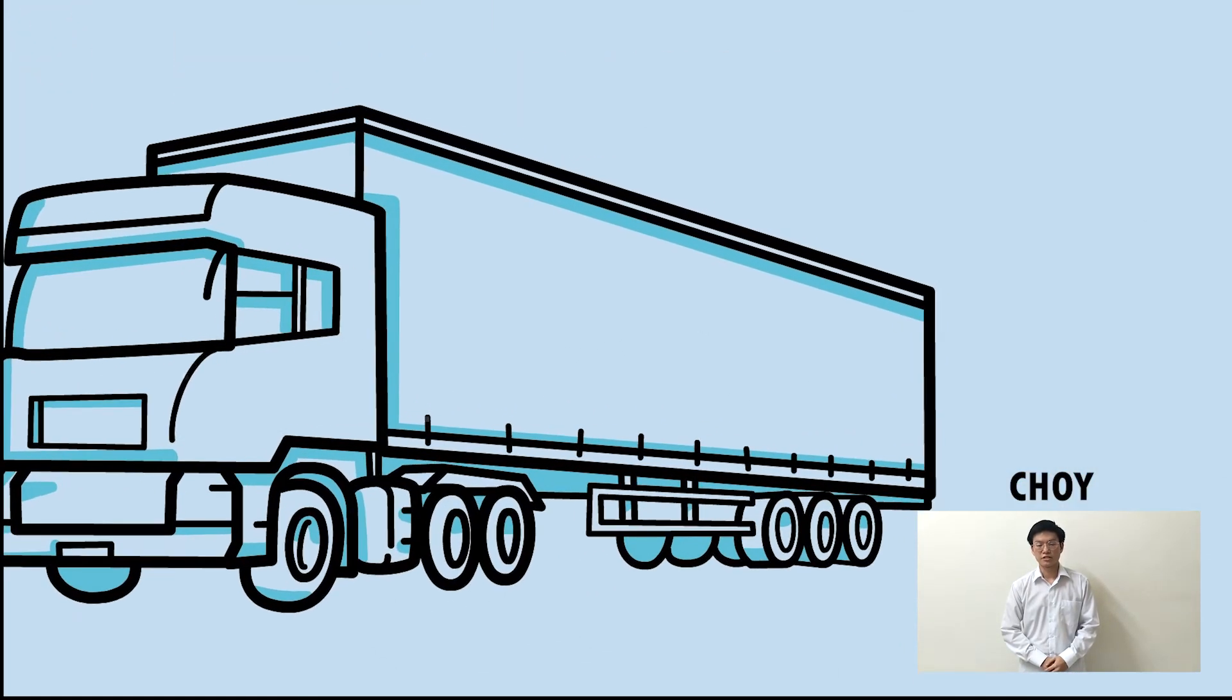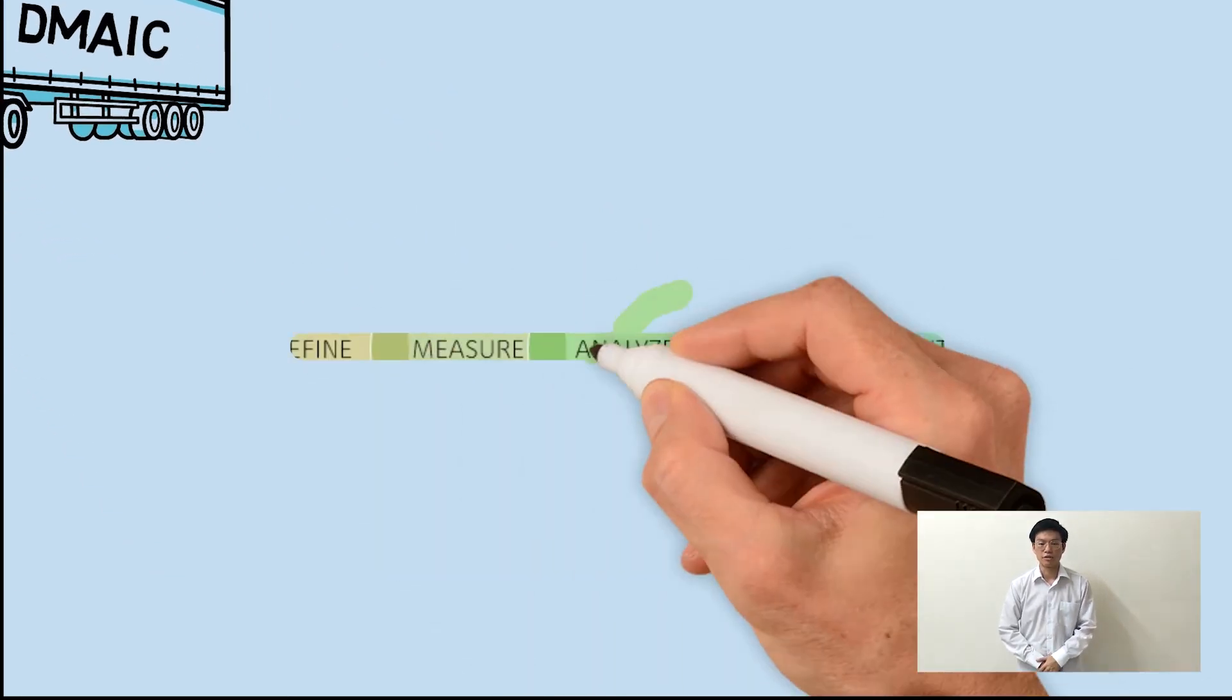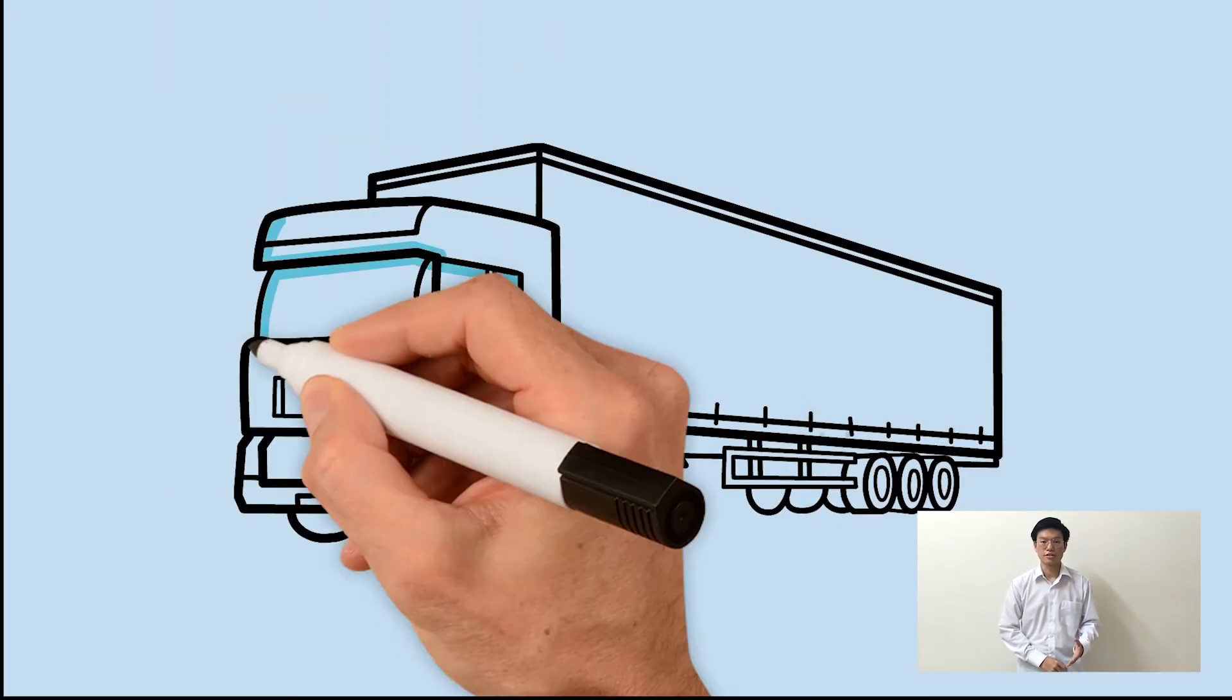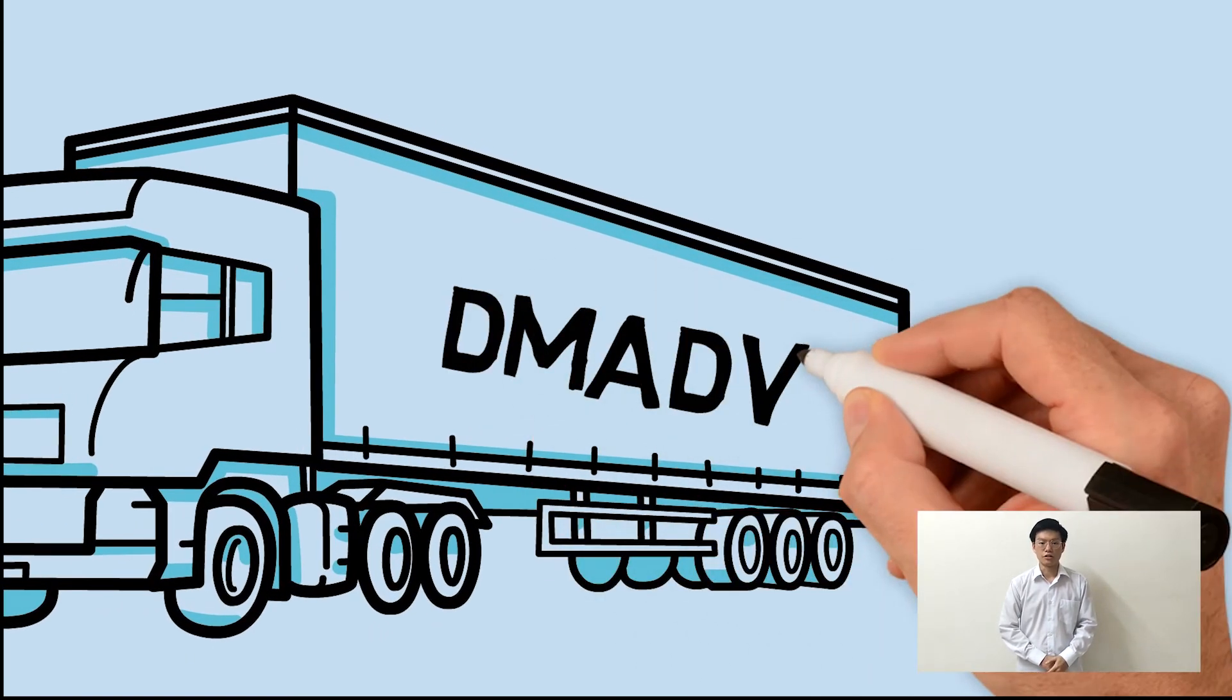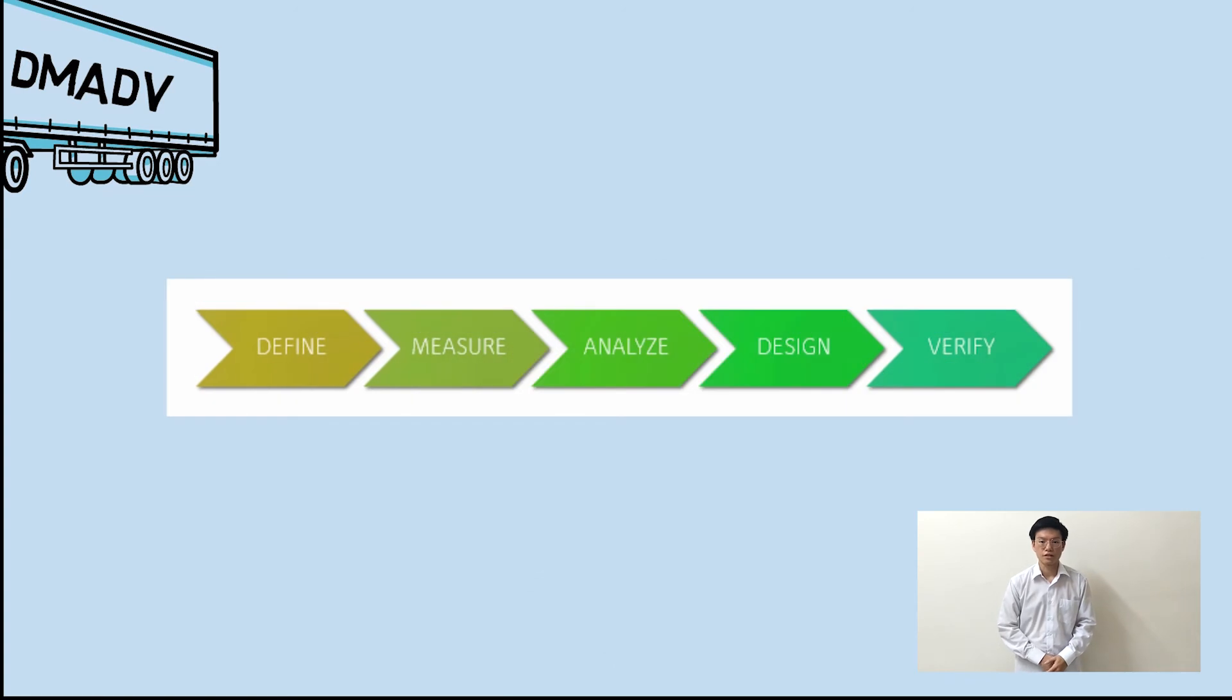Six Sigma implementation has two methods: DMAIC and DMADB. For DMADB, after define, measure, and analyze phases, the design phase develops new procedures to fulfill customer needs and wants.